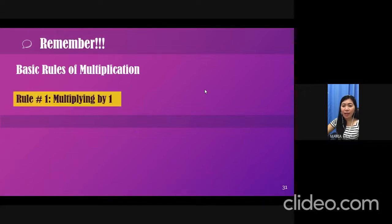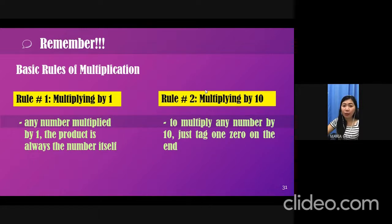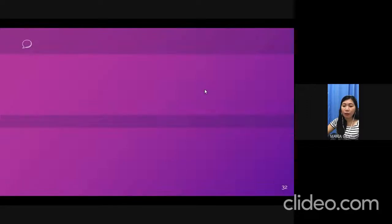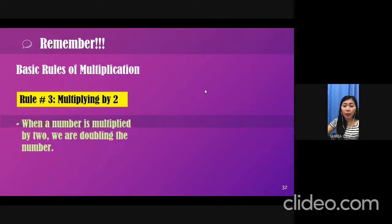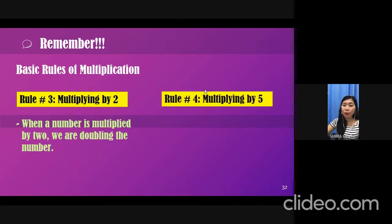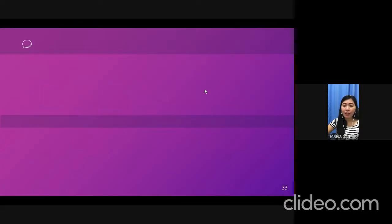This time, let's have a recap of the basic rules of multiplication. Rule number 1, which is multiplying by 1. Any number multiplied by 1, the product is always the number itself. Rule number 2, multiplying by 10. To multiply any number by 10, just tag 1, 0 on the end. For rule number 3, multiplying by 2. When a number is multiplied by 2, we are doubling the number. For rule number 4, multiplying by 5. Use what you know about skip counting by 5. And for the last rule, which is multiplying by 9.